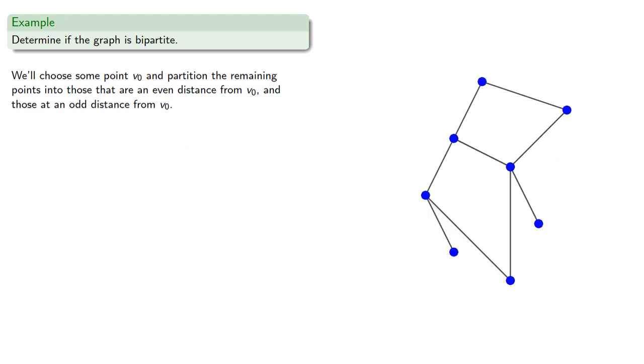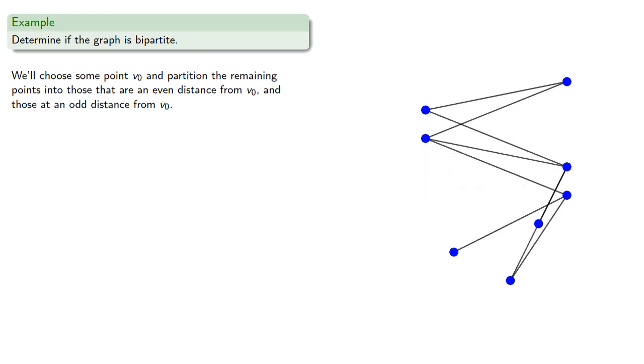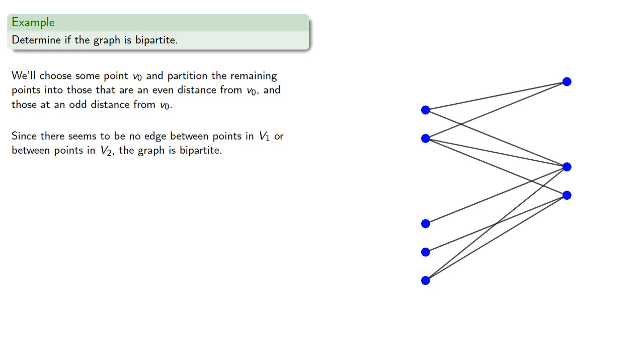Let's try another example. We'll select a point, move the adjacent points to one side, move the points adjacent to those to one side, move the points adjacent to those to one side, and now we have all of our points categorized by their distance from our starting point. We see no edge connects points in the same set, so the graph is bipartite.